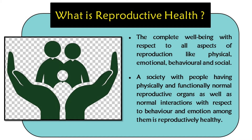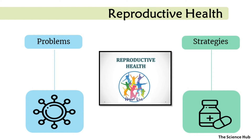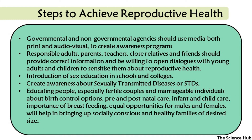A society with people having physically and functionally normal reproductive organs, as well as normal behavioral and emotional interactions, is considered reproductively healthy. We will discuss various problems that might be encountered and strategies to prevent them for achieving good reproductive health.